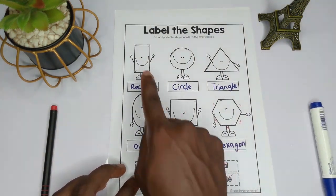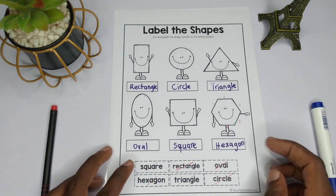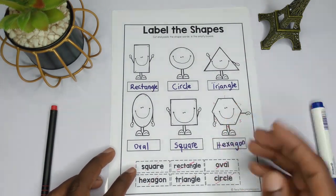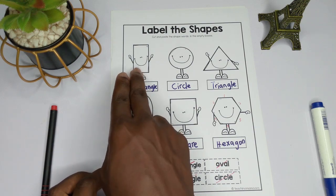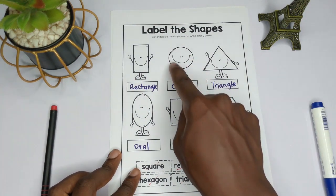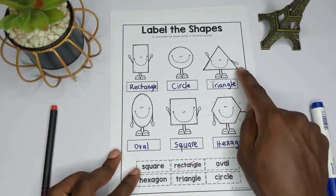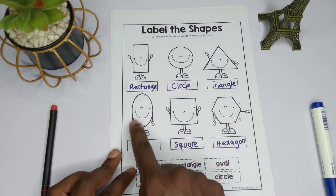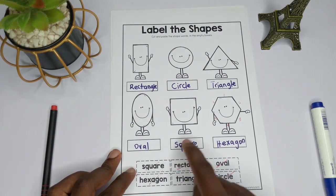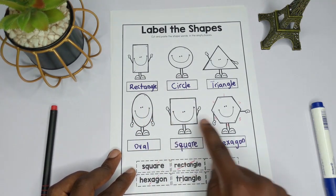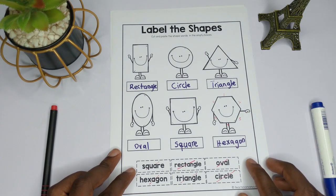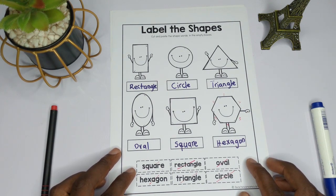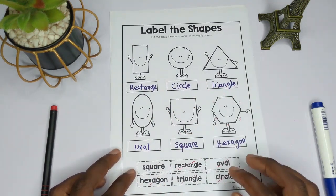Thank you so much for watching. This is how we label shapes in mathematics. This shape is a rectangle, this is a circle, this is a triangle, this shape is oval, this is a square, and lastly this is a hexagon. Thank you so much for watching and I will see you in the next video, bye bye.